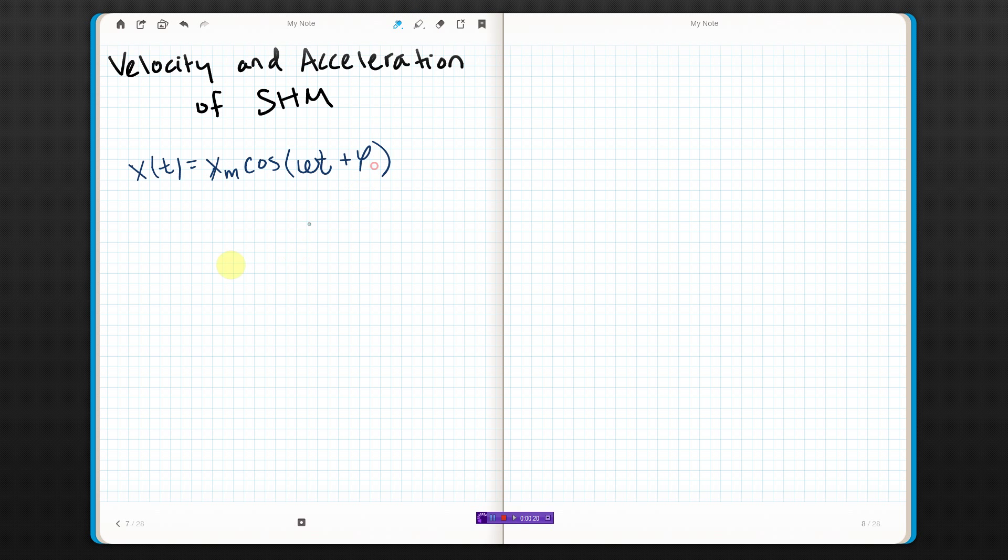Well, I know that velocity of anything is the derivative of x, of position, with respect to time. So I just need to take the derivative of this. Now, xm is a constant, so we just leave that alone, okay?